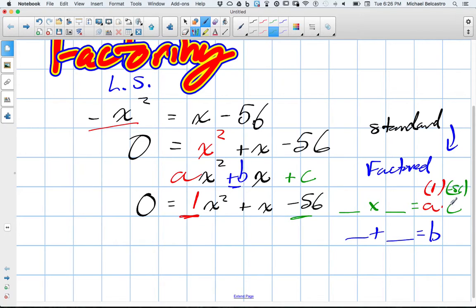So 1 times negative 56 is just negative 56. Whenever the a term is 1, we really don't even need to multiply by a. But if our a term isn't 1, then we have to go through this process. So we're looking for two numbers that multiply to negative 56. And what's our b term? Just 1. So we need two terms that add up to just positive 1.